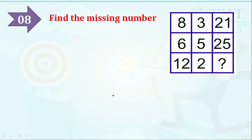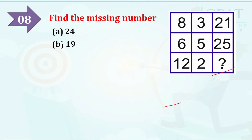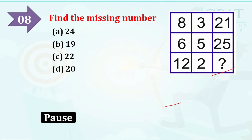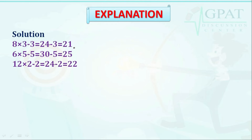The next question: find the missing number from the schematic diagram. Options are: option A: 24, option B: 19, option C: 22, option D: 20. The correct answer is 22. Explanation: 8×3 − 3 = 21; 6×5 − 5 = 25; 12×2 − 2 = 22.